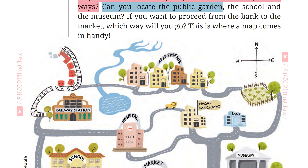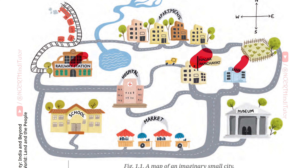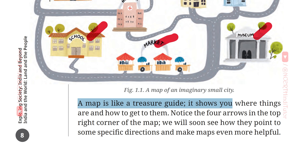Can you locate the public garden, the school and the museum? If you want to proceed from the bank to the market, which way will you go? This is where a map comes in handy. यह वह जगह है जहाँ एक नक्शा काम आता है। The map shows the railway station, bank, नगर पंचायत, apartments, hospital, market, school, and museum. A map is like a treasure guide — it shows you where things are and how to get to them.